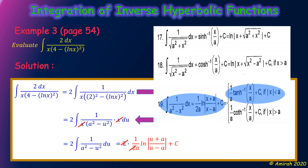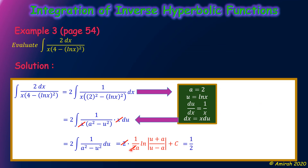After that, we simplify the 2 here with the 2a in the denominator. We replace a by 2 and u by ln x. So the final answer is (1/2) ln|(ln x + 2)/(ln x − 2)| + c. This is the final answer.